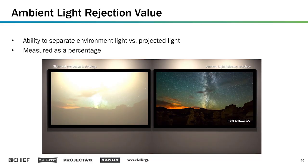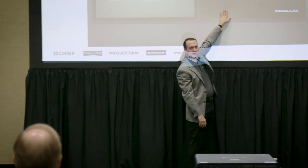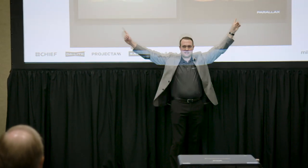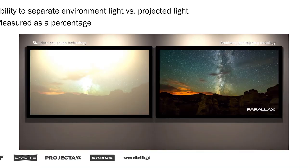So if you're in an environment with high ambient light — even a room like this one — you might want to consider a surface like this. This is the same image on both screens here: you can see on one we're able to see the image well, and on the other we're not, because of that ambient light value being in the equation.